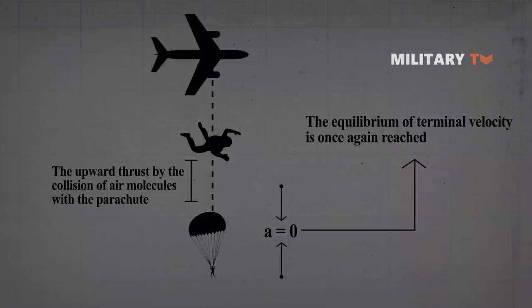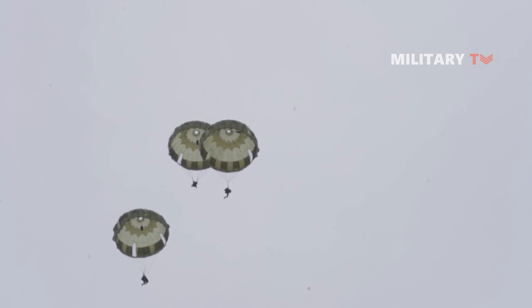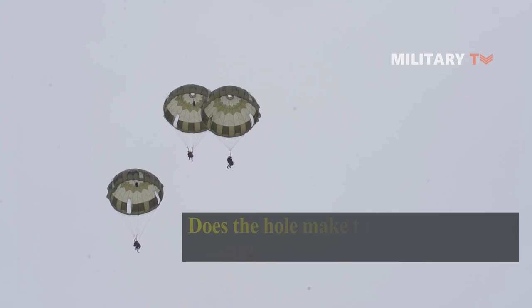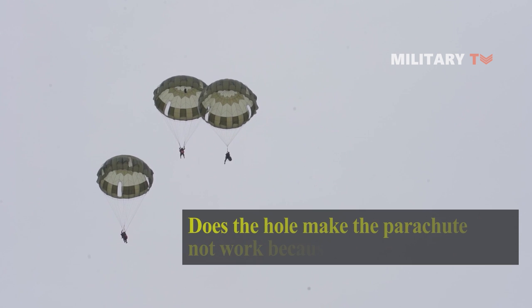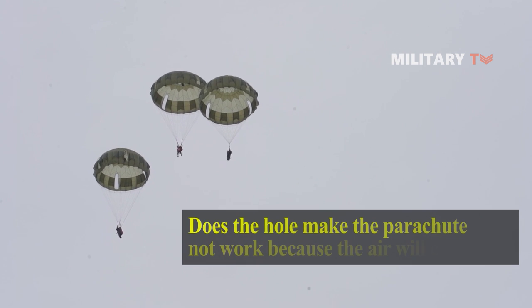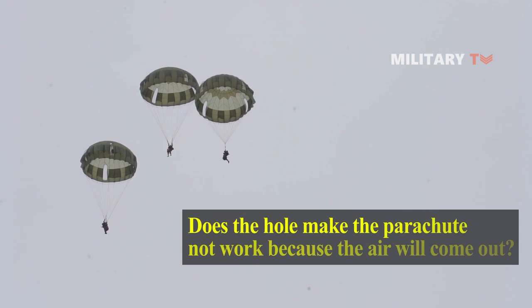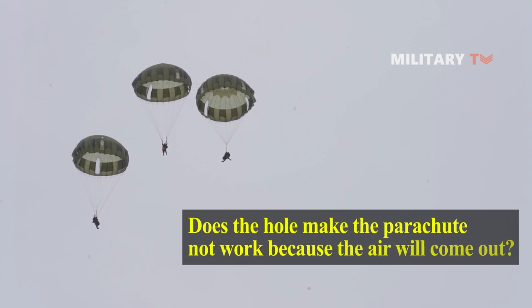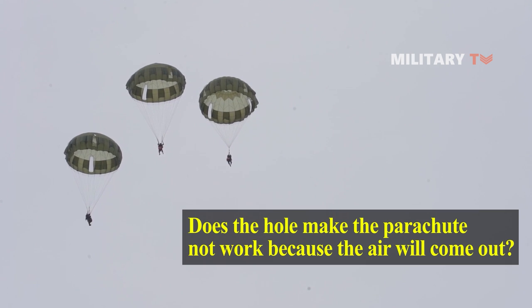So if drag is so critical, and pushing down as much air as possible is the key to slowing a fall, round parachutes with holes don't seem to make sense. The holes let air pass through and continue its way without slowing down the jumper.